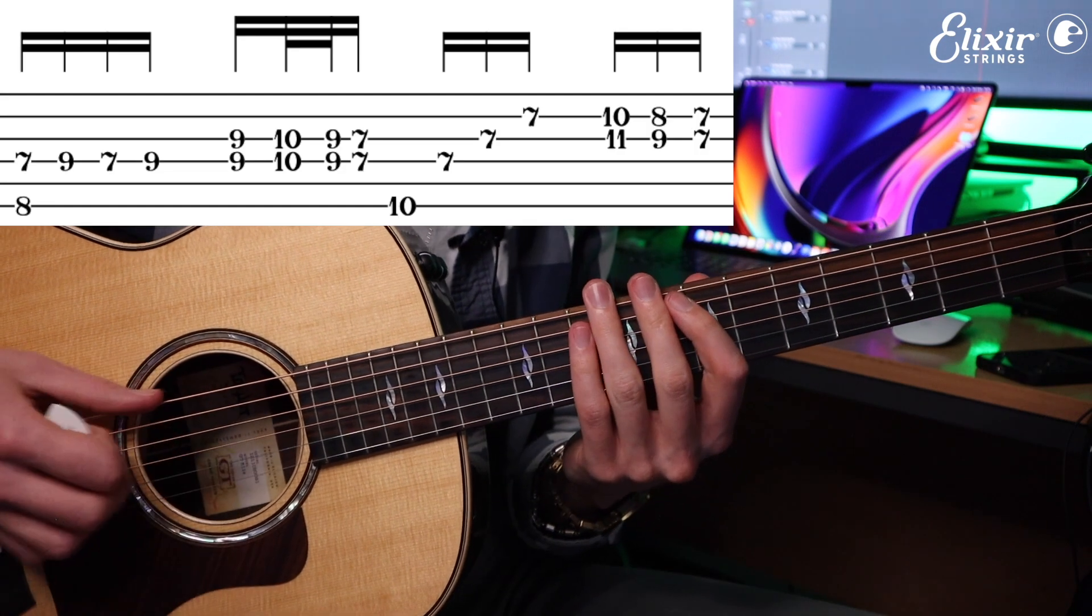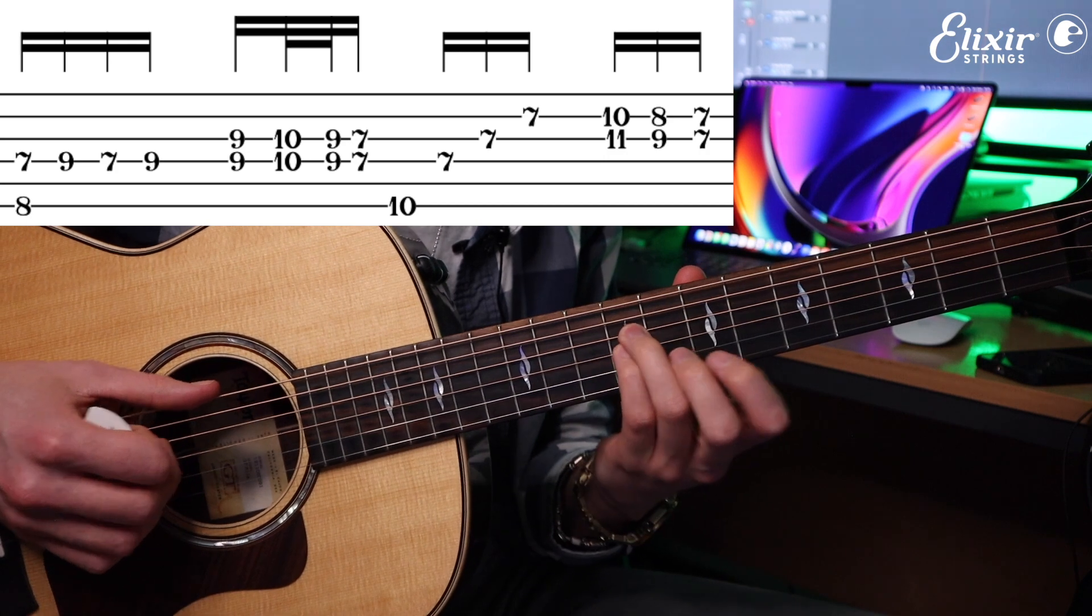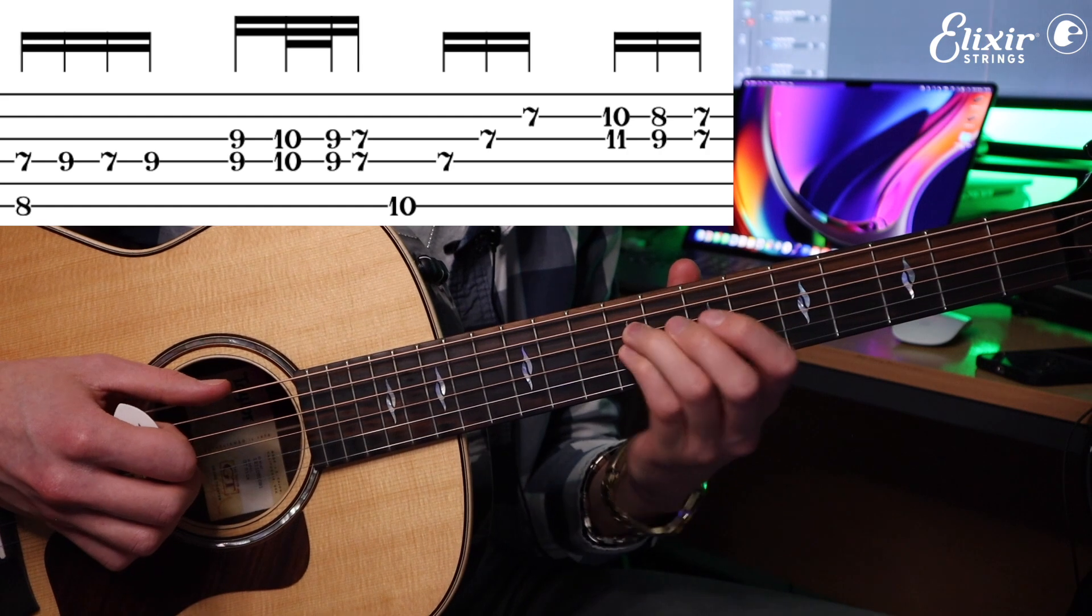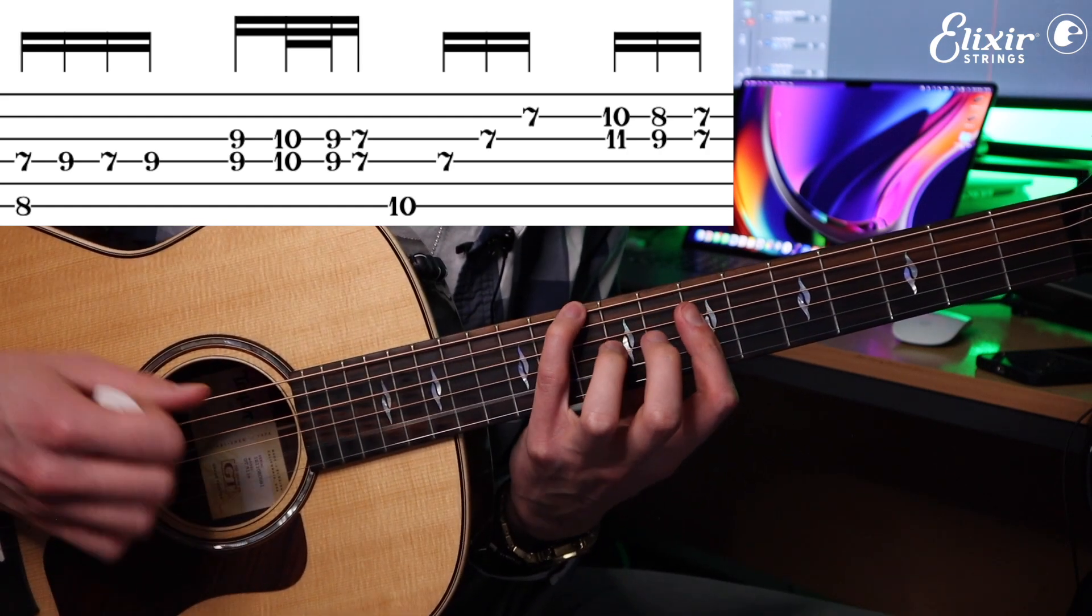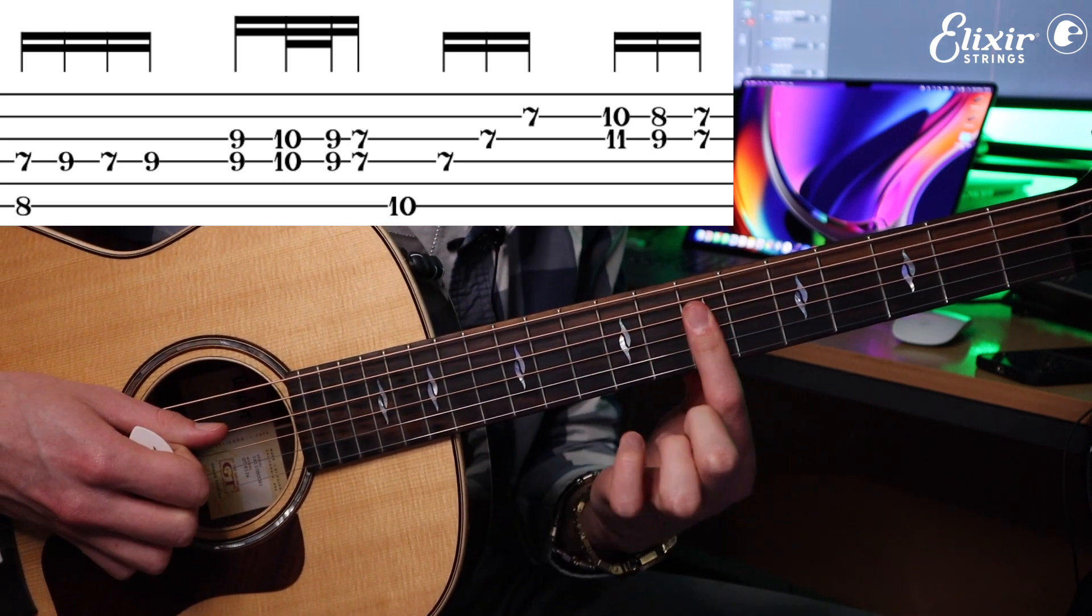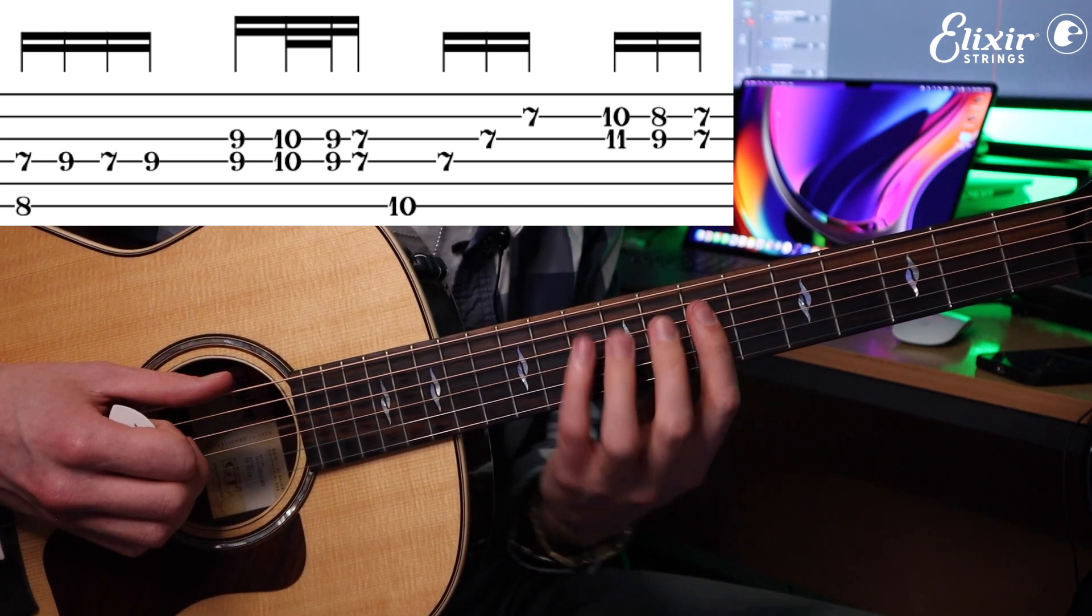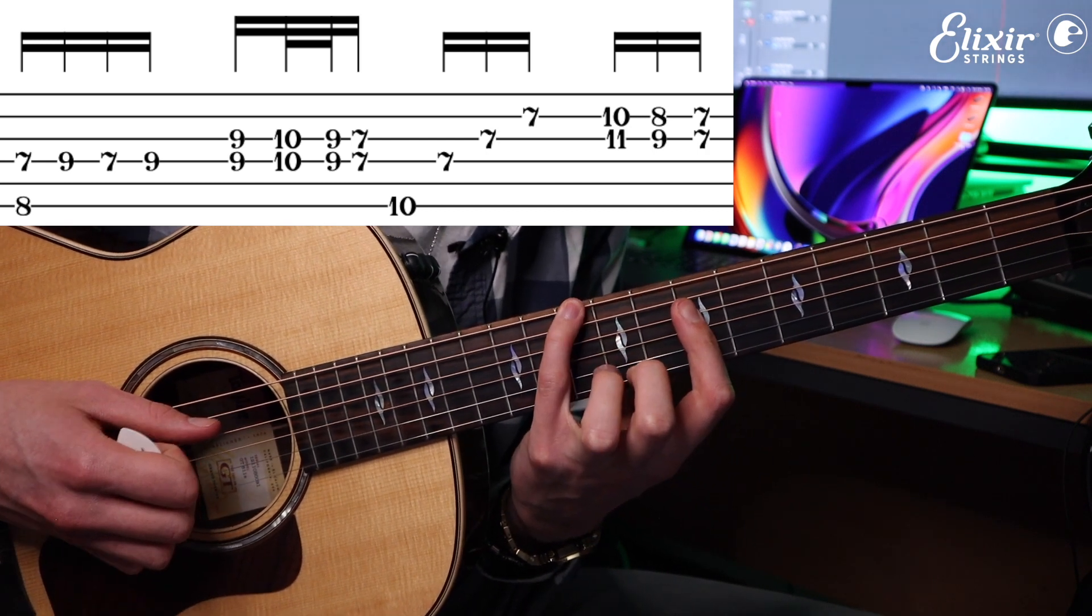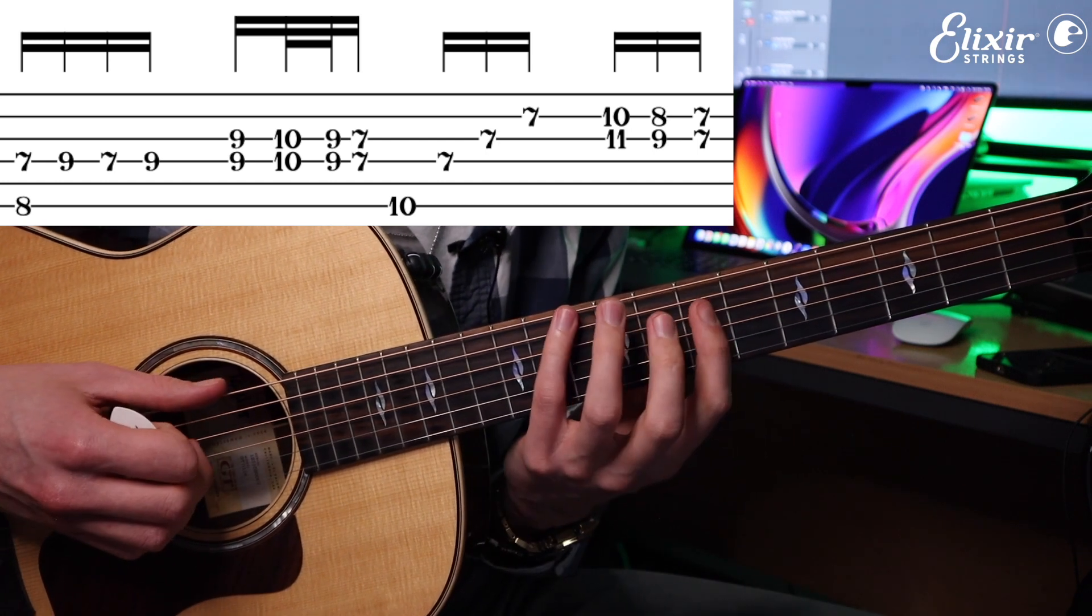Then we go back up to this C chord and then we have a quick little double stop slide, which is the ninth fret quickly up to the tenth and back down to the ninth, pulled off to the seventh. And then we have this chord which is really a D major, so we have our little finger on the tenth fret of the low E and our first finger barring the seventh fret of the D, G, and B strings.